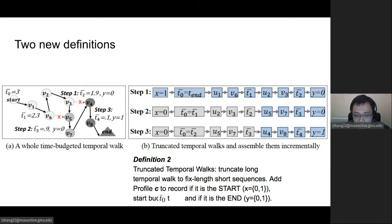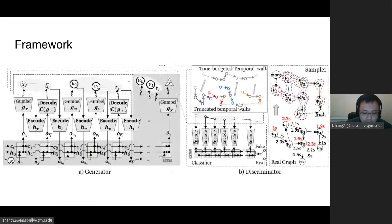The second definition is truncated temporal walks. A temporal graph can have maybe one edge and can also have millions of nodes. We truncate long temporal graphs to fixed length short sequences. To make connections between this short sequence, we additionally add the profile information, which indicates X equals one, which means this short sequence is from the very start. It can also have the budget and another binary indicator if this truncated temporal walk is the very last one.